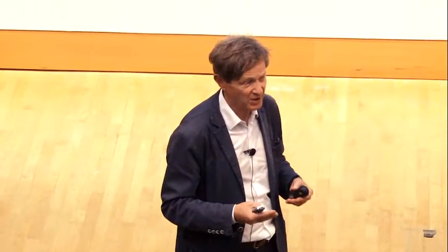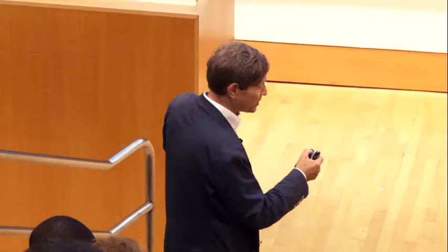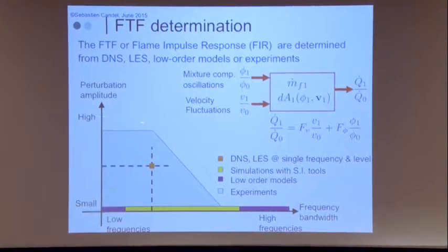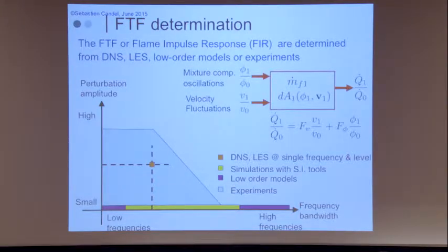One way is to accelerate this by developing better algorithms — it's not easy. You can certainly use calculations to compute transfer functions. Experiments can be very useful because an experiment can give you an answer much quicker. For nicely controlled flames you can use experiments — single injector experiments where you look at one injector, get the transfer function, and then use that for multiple injector situations.